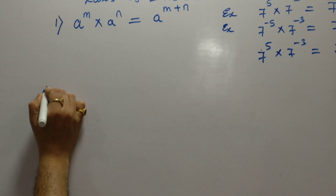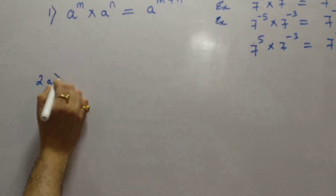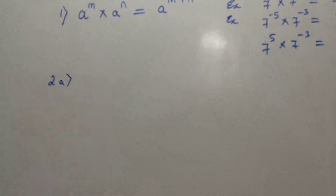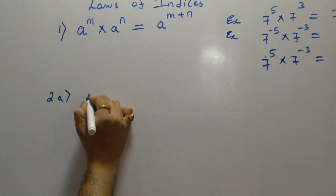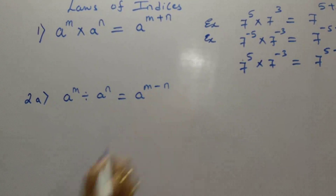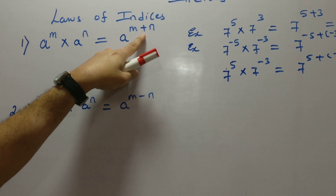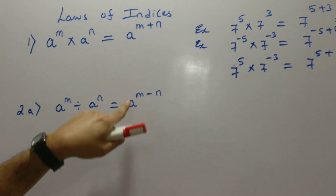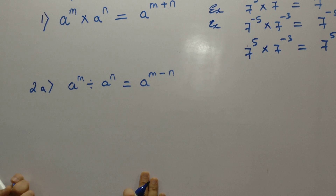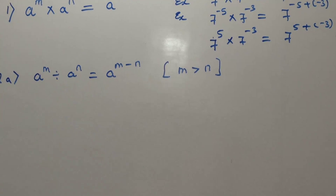The second law is divided into two parts. Law 2A says: A raised to M divided by A raised to N, answer is A raised to M minus N. In multiplication we were summing up the powers, M plus N. In division we are subtracting the powers, M minus N. The condition here is M should be greater than N.